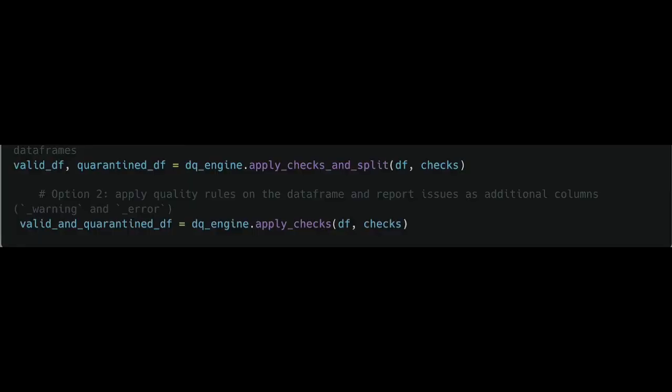These are default provided checks in the DQX Python package. You can see at the bottom we apply those checks and split — taking the DQ engine, the DataFrame, and the checks we wrote. We can say split, giving back a valid DataFrame and a quarantine DataFrame for records that don't meet the checks. Or if you want everything in the same DataFrame, you can just use apply checks, pass it the DataFrame and checks, and you'll get a single DataFrame with an extra column.